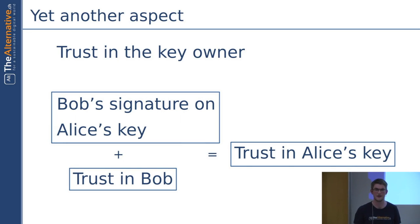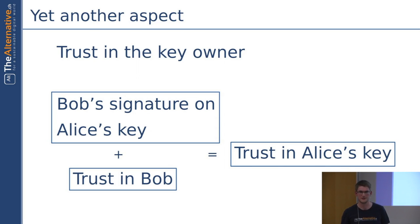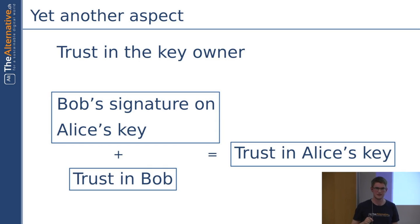Where do you get all these other keys from? From the key server, for example — everybody uploads their key to the key server and then anybody can go to the key server and obtain the public key from the other person. How do we know who trusts which other key? We can see that because if you sign the key from another person you upload the key again, and then the key with your signature on it is on the key server. When you download the key you also get all the signatures from the other people and then you are able to follow these signatures.